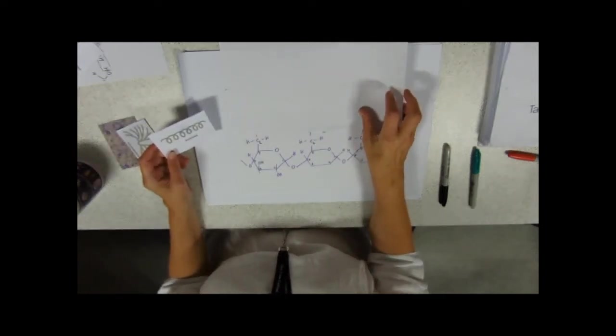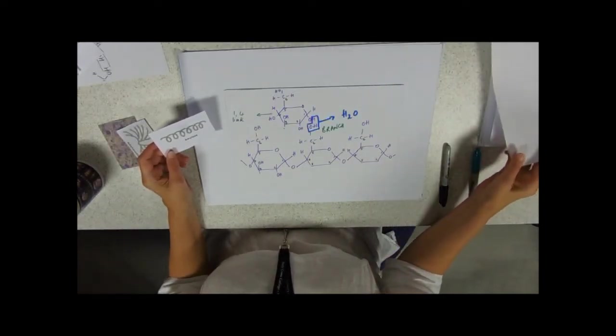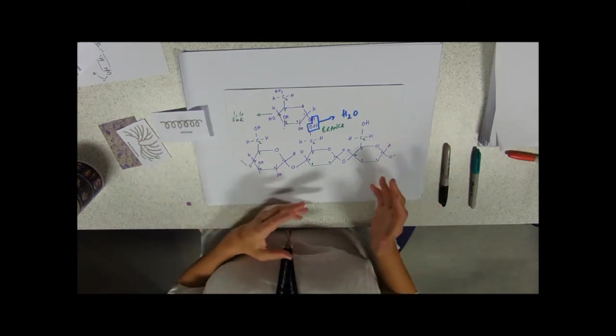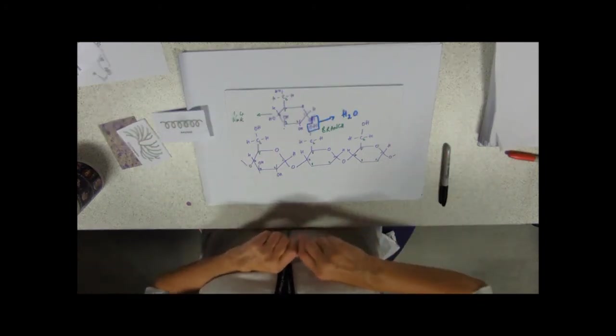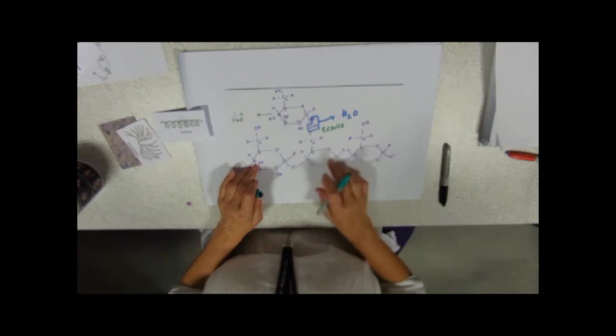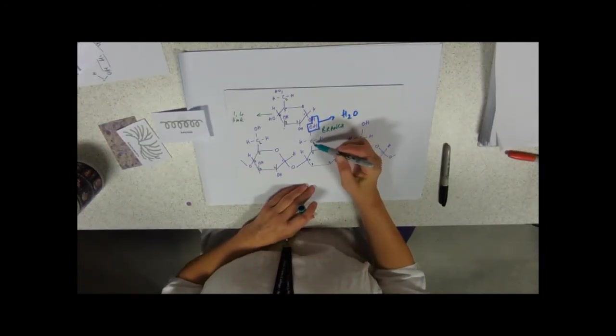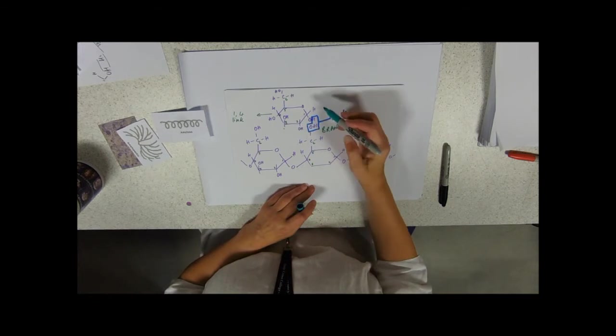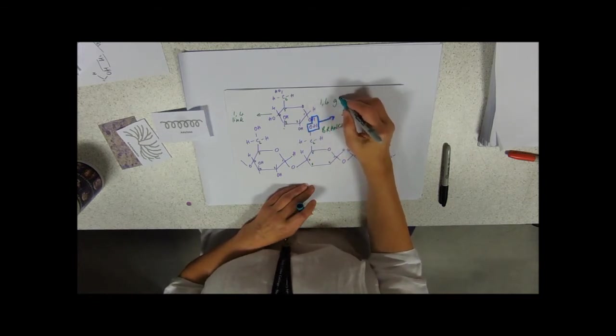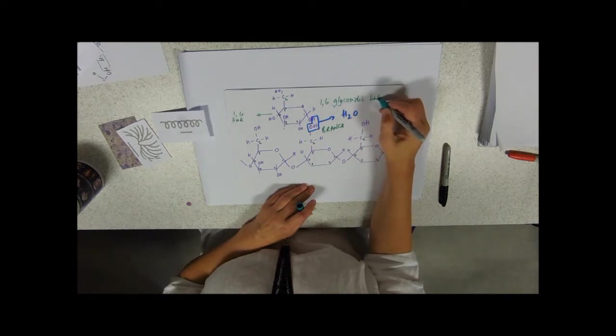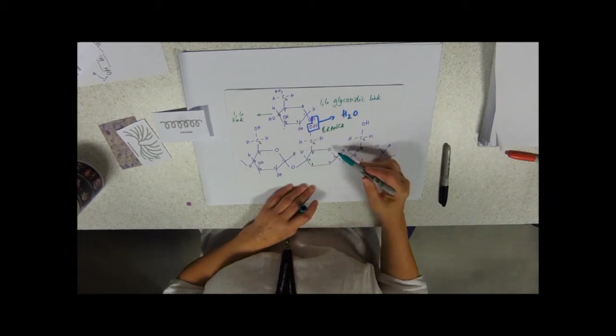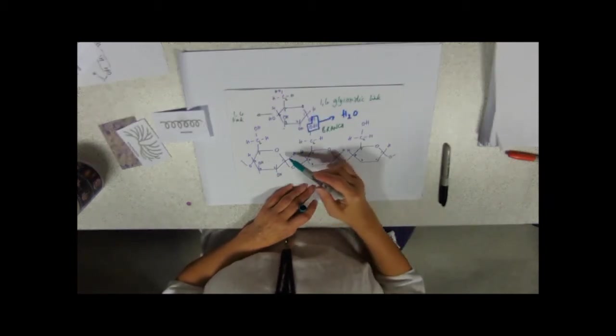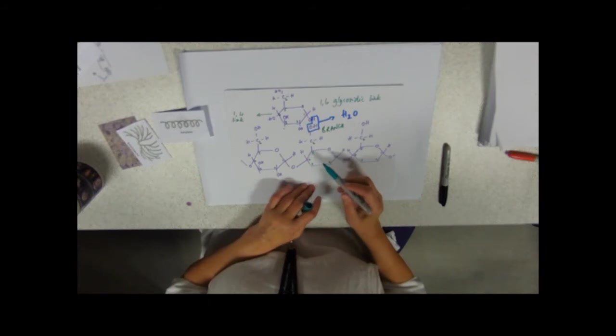Starch is quite unusual. It's got two main components. The other sort of bond that forms in starch is what we call a 1-6 link. So 1-4 links between carbons number 1 and 4. If we bonded the carbon number 6 OH group to a carbon number 1, we'd get a 1-6 glycosidic link.